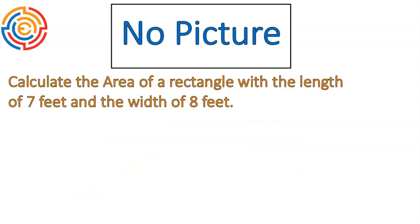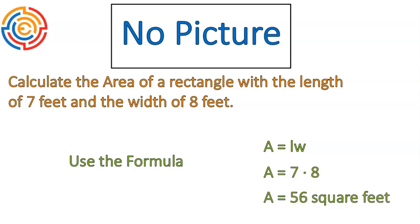Now we're going to make it a little bit more challenging and give you a question without any picture as a reference. Calculate the area of a rectangle with the length of seven feet and the width of eight feet. You'll still use the formula area equals length times width, but you'll have to put in those values without seeing a picture. Look at the question, find what the length is, put that in for L. Find what the width is, put that in for W, and multiply those two numbers. Did you do seven times eight and get 56 square feet? If so, good job.